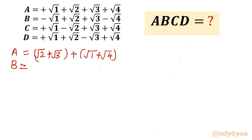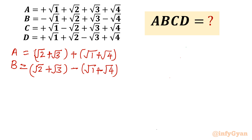Now B — if you see B, it is root 2 plus root 3, then I will write minus common, then root 1 plus root 4. You can check: root 1 and root 4 are negative in B but positive in A. Now if I consider A here and B here, this one is A plus B and this one is A minus B.